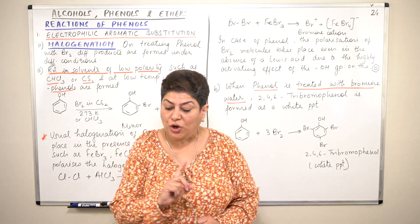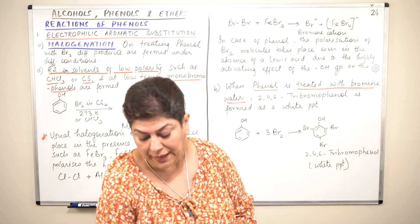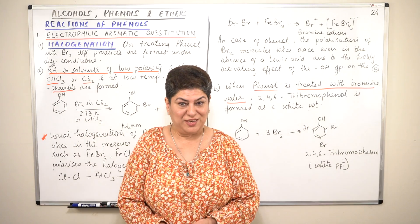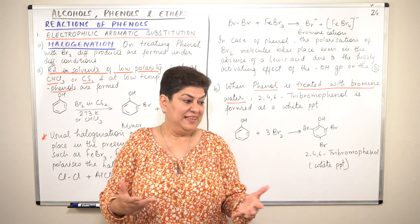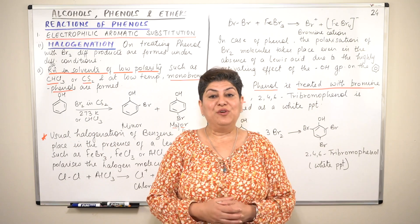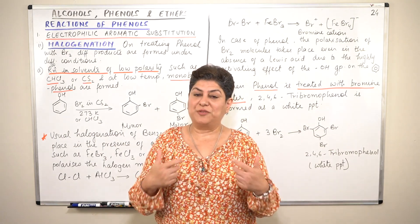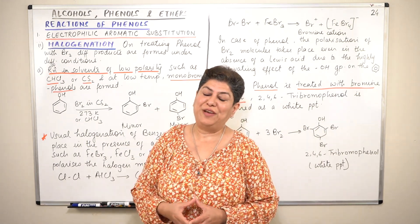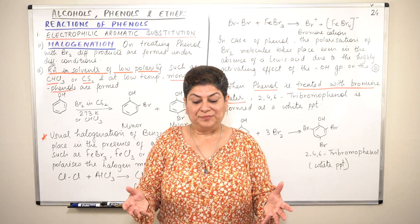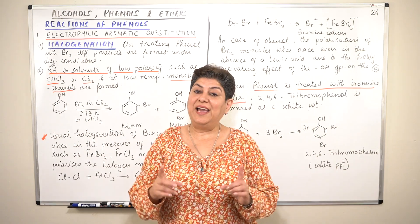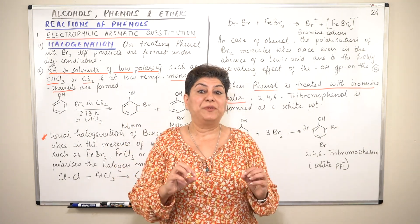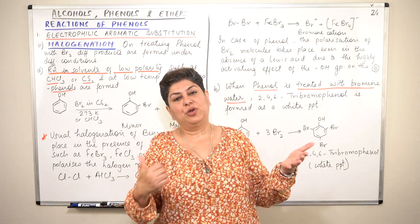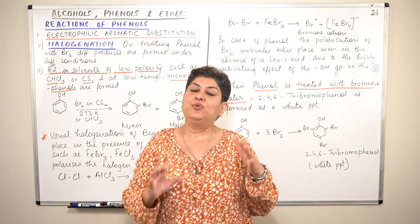So this was halogenation. In the next video, I will make a short video of the solved example 11.5. After that, we will do the second category of reactions, that is Kolbe's reaction. So with this, I will finish this video. If you found it helpful, please give it a thumbs up, subscribe to my channel, and recommend it to your friends. It would be great joy to me if my videos are of any help to you. Come back for more videos in chemistry, and I have playlists of different chapters on my channel.